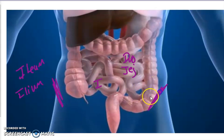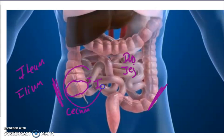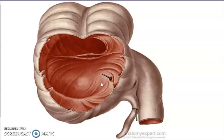If we zoom in on the ileum, this is my ileum right here. This right here is the first part of the large intestine, and it is called the cecum. Here is my ileum, and this is my cecum.